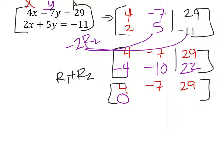Negative 7 minus 10 would be a negative 17. And that is equal to 29 plus 22, which is 51.